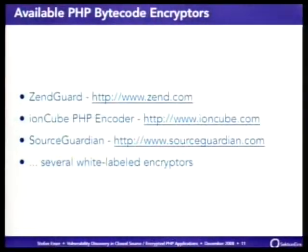There are some available PHP bytecode encryptors — these are the three most known: Zend Guard from Zend, the ionCube PHP encoder from ionCube, and SourceGuardian. There are many different cryptors, especially the people behind SourceGuardian have a lot of white-labeled cryptors that are all more or less the same, but sold to different users at different prices under different names. When you see one of those cryptors and can't tell who is behind it, most probably it's a SourceGuardian one.